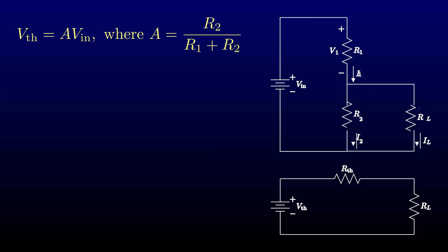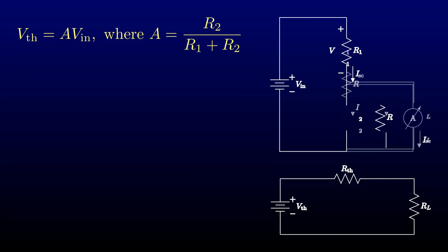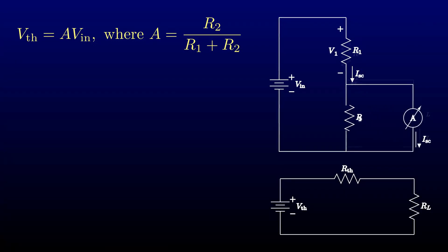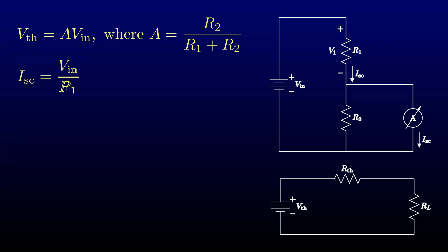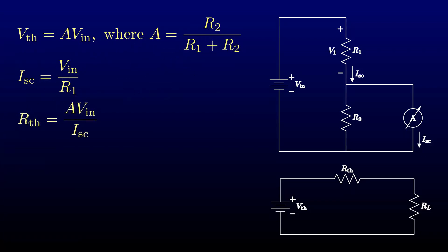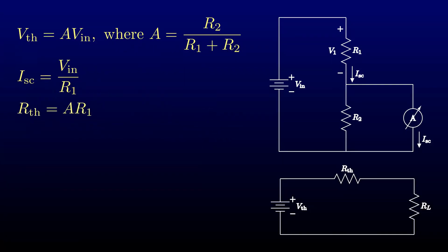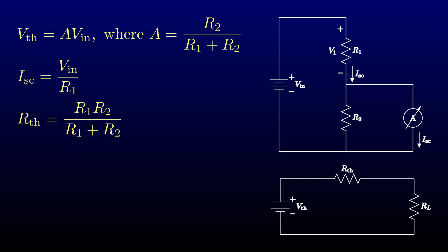To find the equivalent resistance, consider what the divider will do if we measure the output current into a short circuit. The current through the lower resistor will be zero because it's shorted out. Applying Ohm's law gives the value of the output current, and applying Ohm's law again tells us what the resistance has to be in the Thevenin equivalent to give the same output current. Let's calculate some more. Look at that — the equivalent resistance is the value of two resistors in parallel.